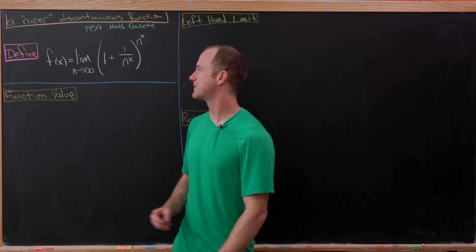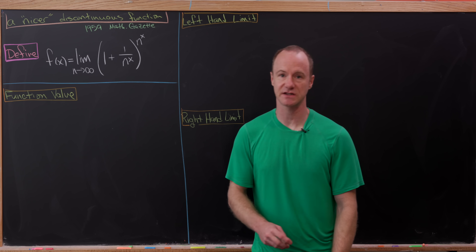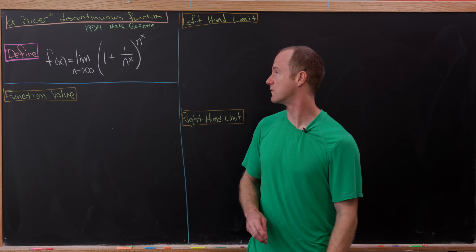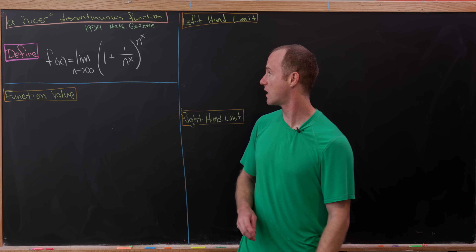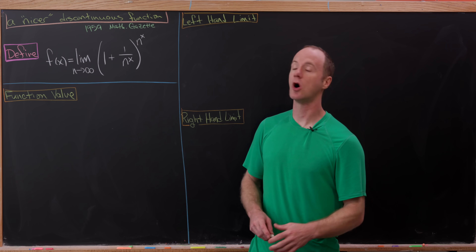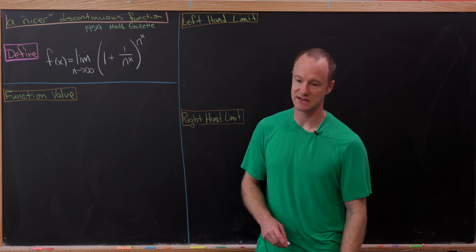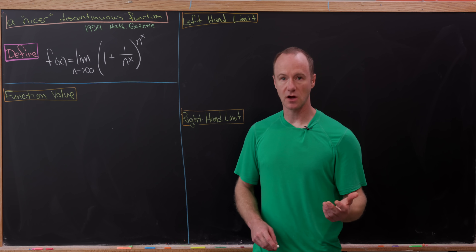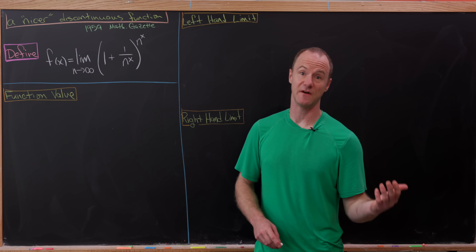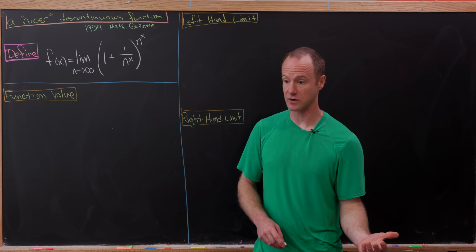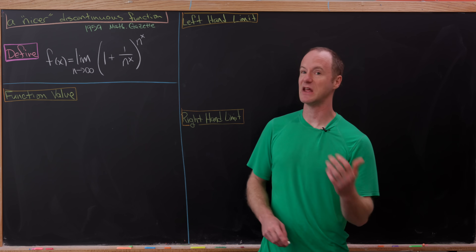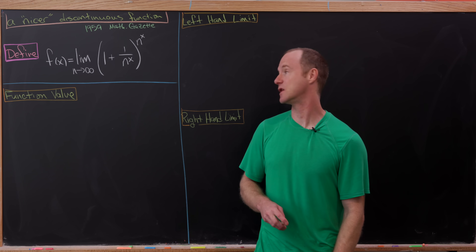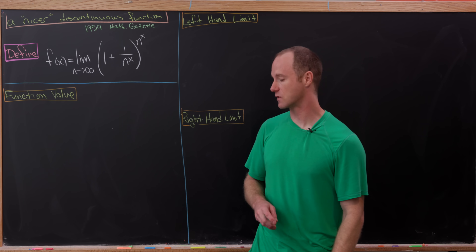So the function is f of x, defined as the limit as n goes to infinity of 1 plus 1 over n to the x, all raised to the n to the x. Let's find the function value, the left-hand limit, and the right-hand limit, all at x equals 0.